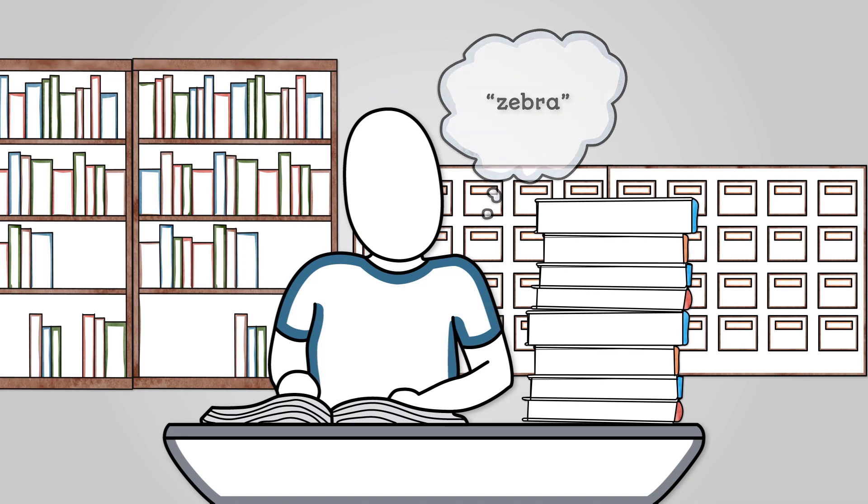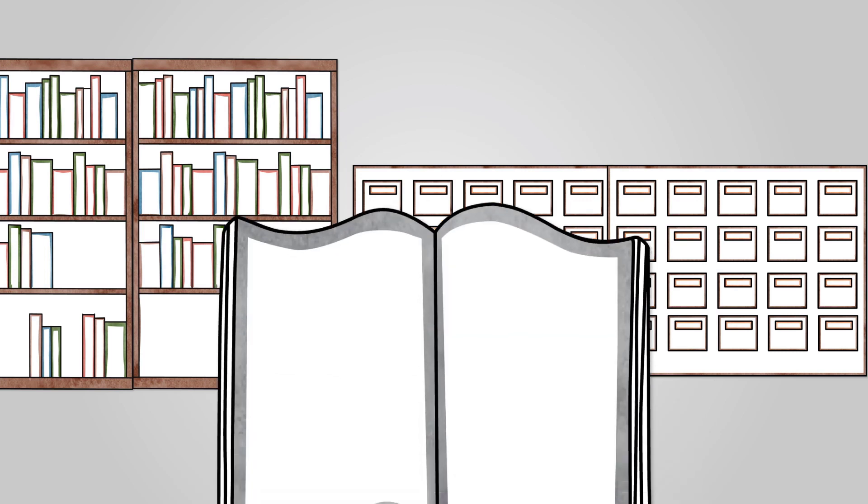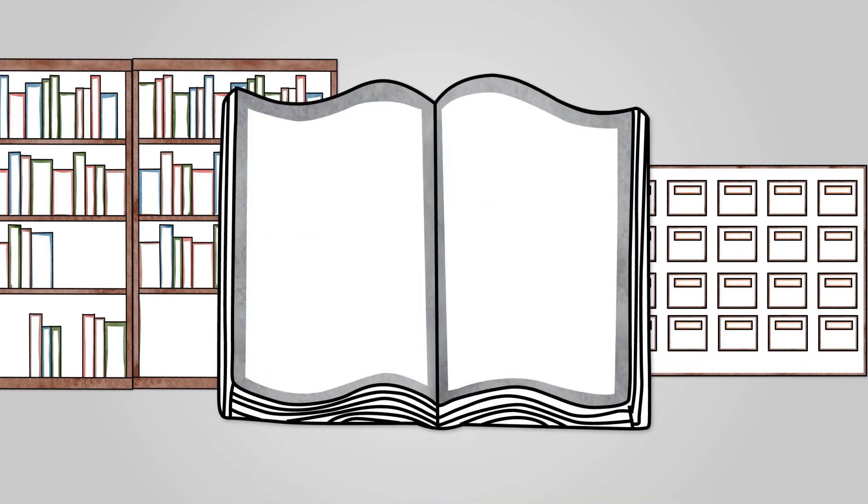A binary search works differently though. Imagine we were looking for the word melon. We would open the dictionary in the middle and then look at the letter we were on. If we were on the letter F we would know that melon is in the right hand half of the dictionary.